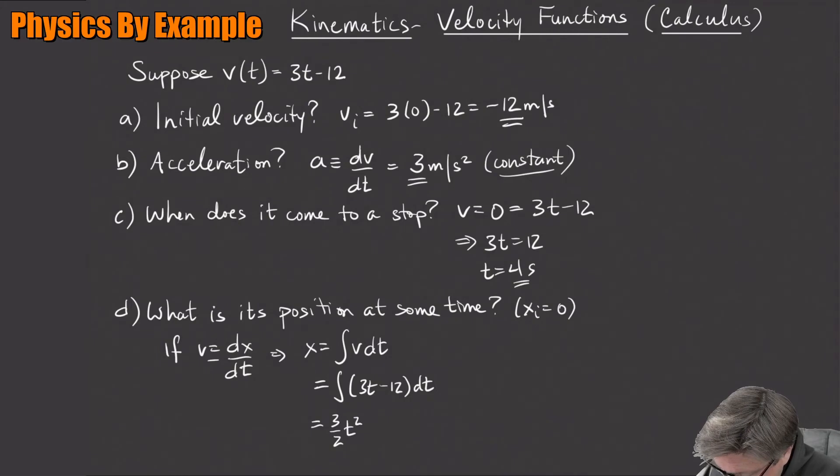That's an indefinite integral, so remember we have our plus c, our constant. But that always turns out to be just the initial position, and we said the initial position is zero, so I really don't have to worry about it. So 3 halves t squared minus 12t.